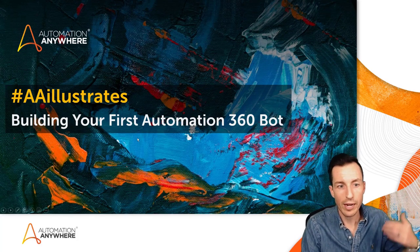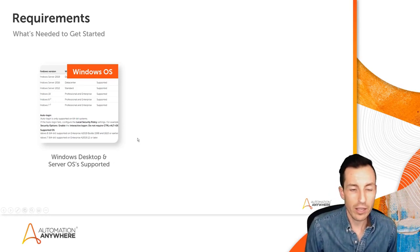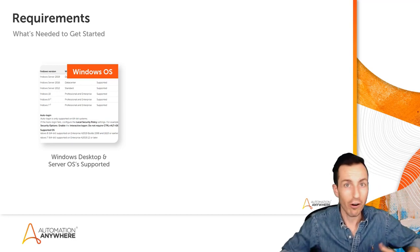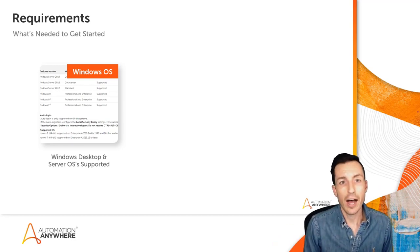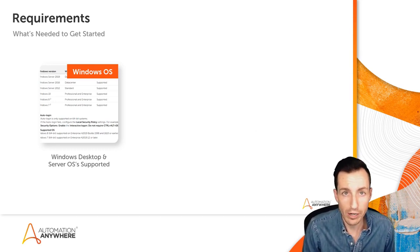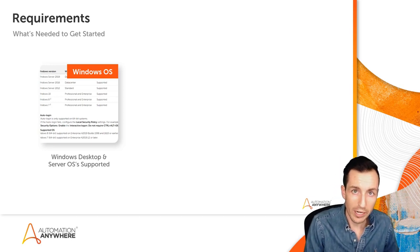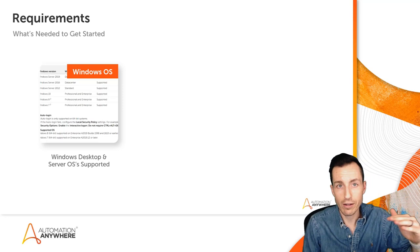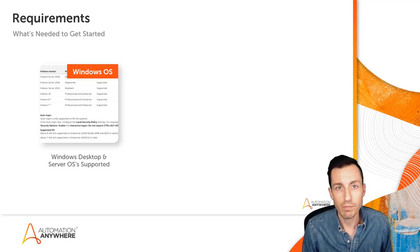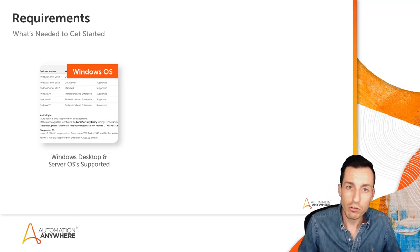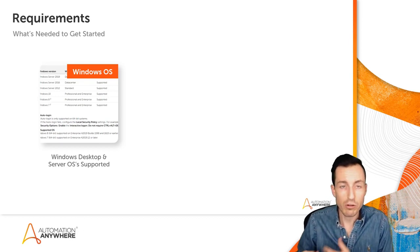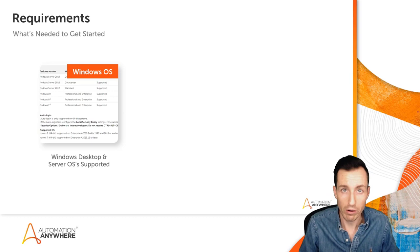Let's take a look at what's required before we can actually get hands-on with the software. First off is having a Windows operating system. This may seem really basic, but you'll need to make sure you're using a Windows desktop or server operating system — that means Windows Server 2019, 2016, 2012, all the way down to Windows 10, Windows 8, and Windows 7. If you're using OS X or Mac, you can use VirtualBox and download a virtual machine, or you can use Parallels.